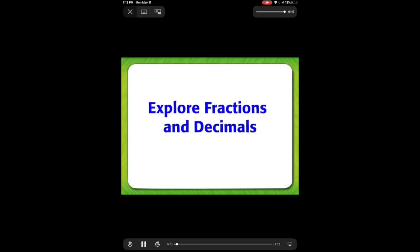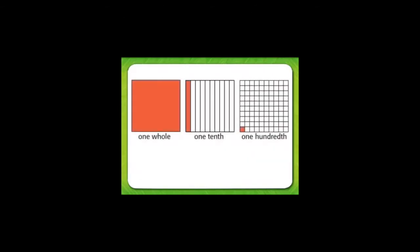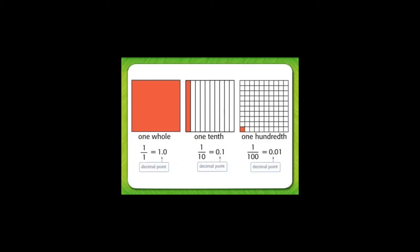Explore fractions and decimals. A fraction shows part of a whole. A decimal also shows part of a whole. A decimal is a number that uses place value, numbers, and a decimal point to show part of a whole.